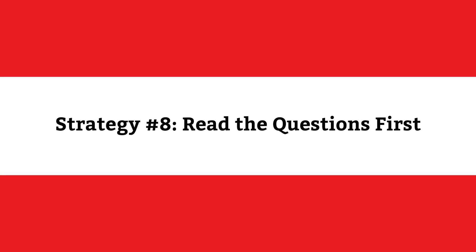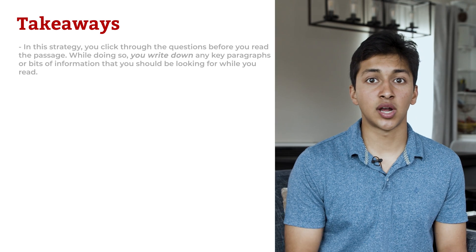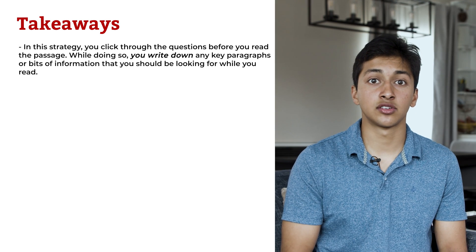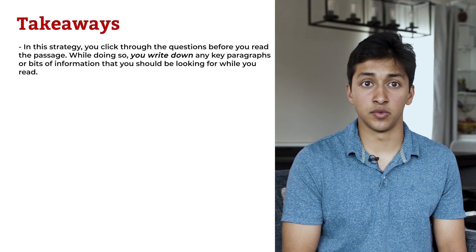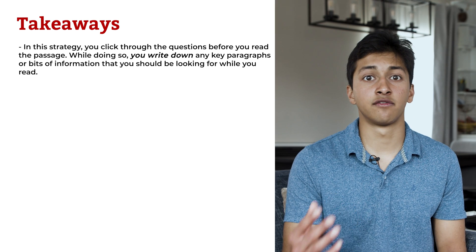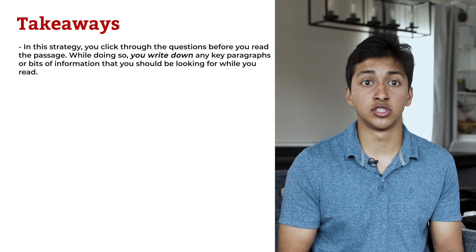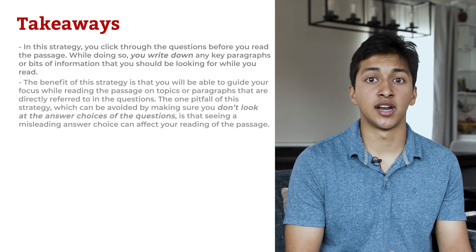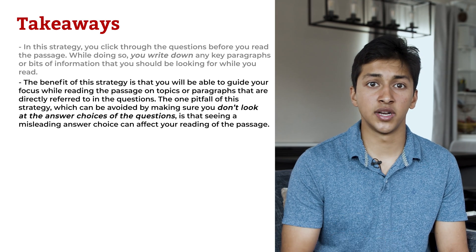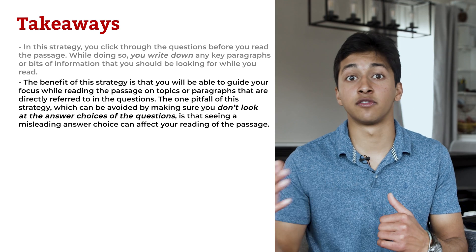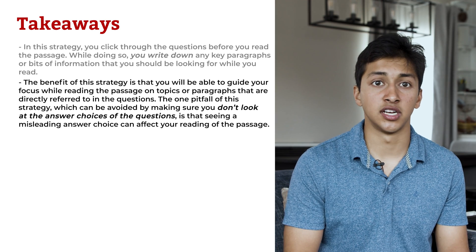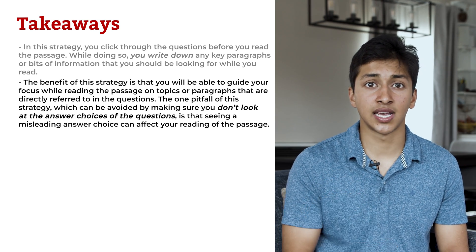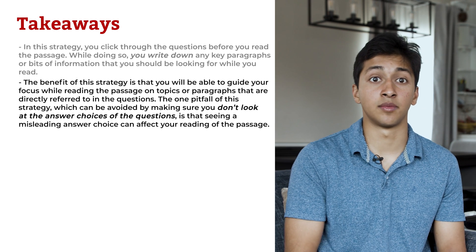MCAT CARS strategy number 8: read the questions first. In this strategy, you click through the questions before you read the passage. While doing so, you write down any key paragraphs or bits of information that you should be looking for while you read. For example, if one question refers to paragraph 4, make sure you understand paragraph 4 once you start reading, in addition to how paragraph 4 fits in with the rest of the passage. The benefit is that you will be able to guide your focus on topics or paragraphs directly referred to in the questions. One pitfall — which can be avoided by not looking at the answer choices — is that seeing a misleading answer choice can affect your reading or interpretation of the passage.